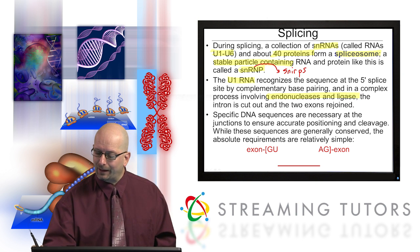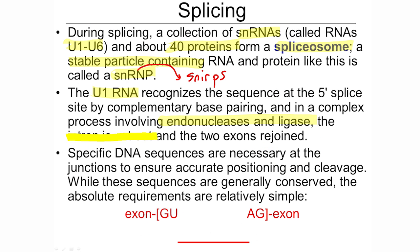The bottom line is that an intron is cut out and the two flanking exons are joined together. Specific DNA sequences are necessary at the splice junctions — sometimes called donor sites — to ensure accurate positioning and cutting, because it has to be exact. This has exquisite specificity to it. These sequences are generally conserved, meaning in most organisms the 5' and 3' splice donor sites are similar, implying this is an ancient and evolutionarily conserved process.